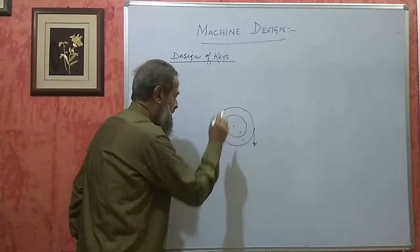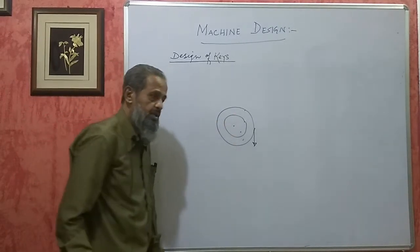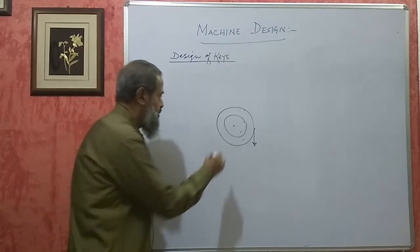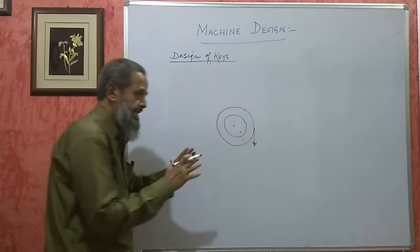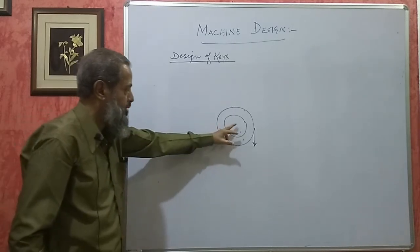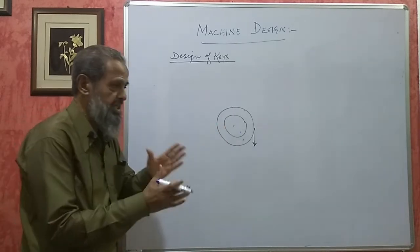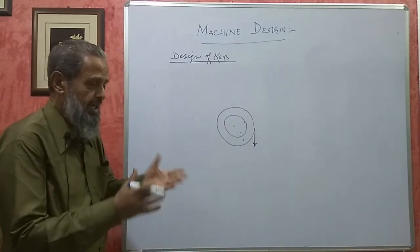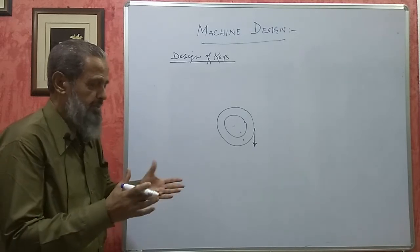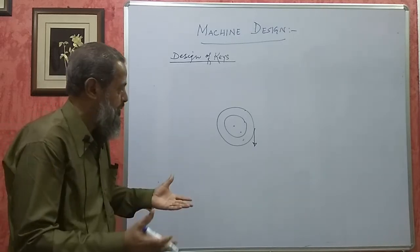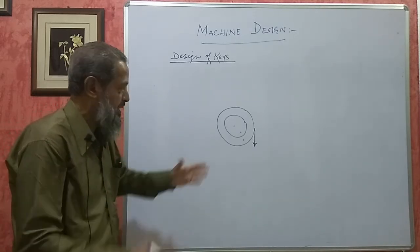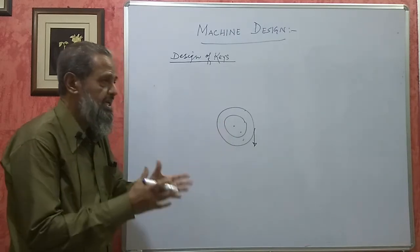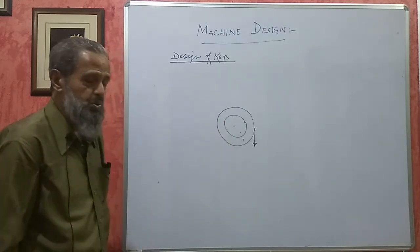If you want that relative motion not to happen, then we have to use what we call a key. A key prevents relative motion between the shaft and the mounting on the shaft — like a gear wheel or a pulley. There should be no relative motion between these two parts, so we have to use a key.